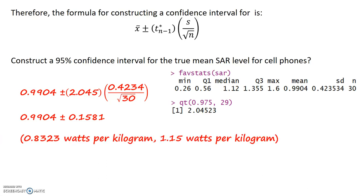As a final answer, my confidence interval always has the form lower bound with units, comma, upper bound with units. So, if I take 0.9904 and subtract the margin of error, my lower bound is 0.8323. If I take my sample mean and add the margin of error, my upper bound is 1.15 watts per kilogram.